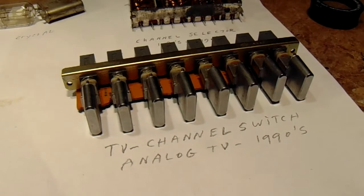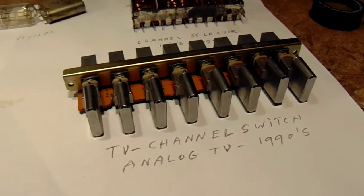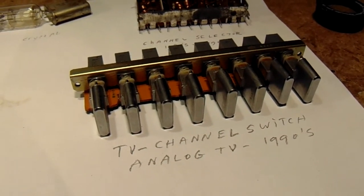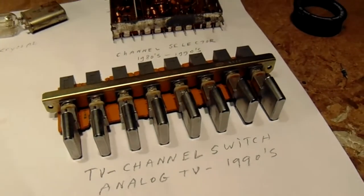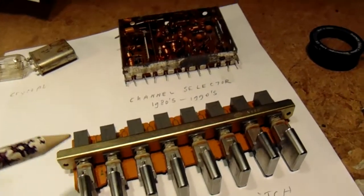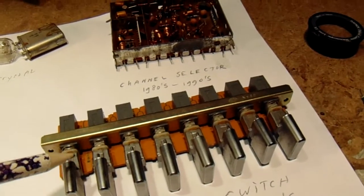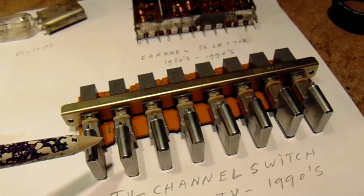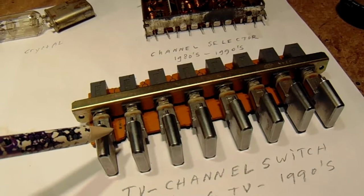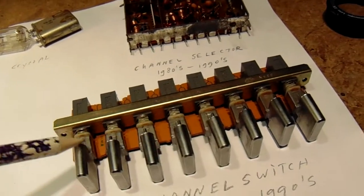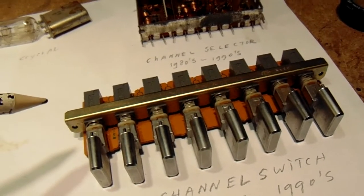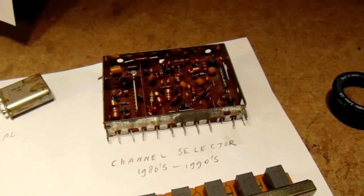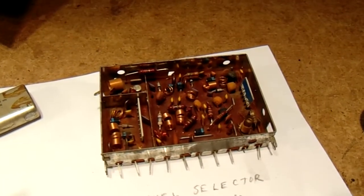And here we have a TV channel switch from the 1990s. I don't have to explain so much here about that switch. They all switch the varicaps, variable capacitors, in a certain way that all channels were reproduced on the TV screen.